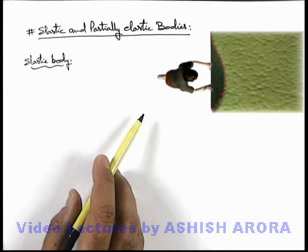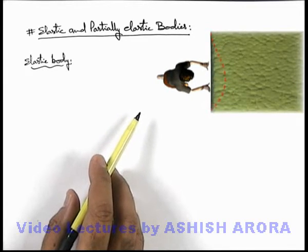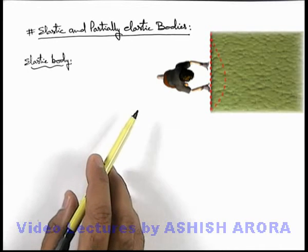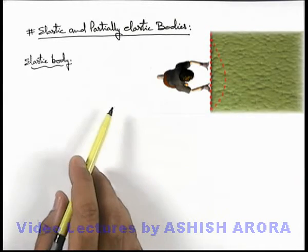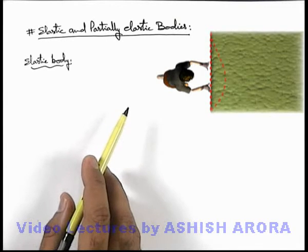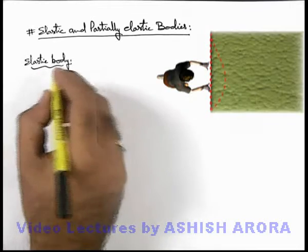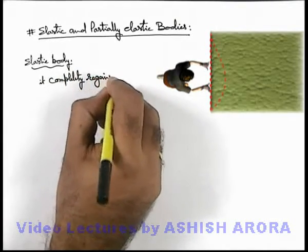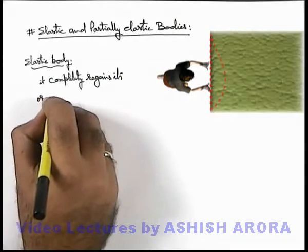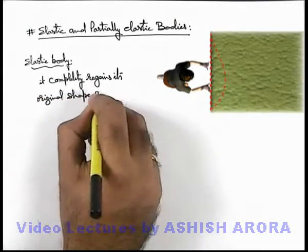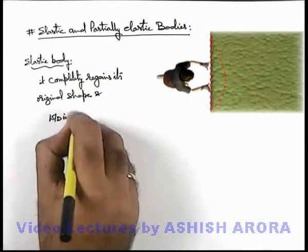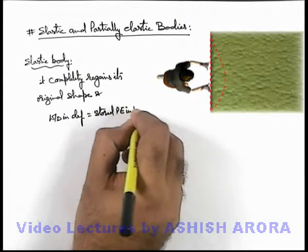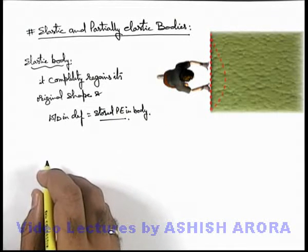And if the force is removed, the body will regain its original shape. So we can say whatever work was done and its deformation was stored in the form of potential energy, and on removal of the force, the whole potential energy will be regained by the agent, or it will be released by the body, just like the case of a spring. So an elastic body is the one that completely regains its original shape, and work done in deformation is equal to the stored potential energy in the body. This is the situation for a perfectly elastic body.